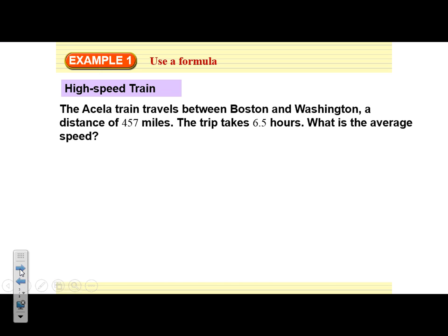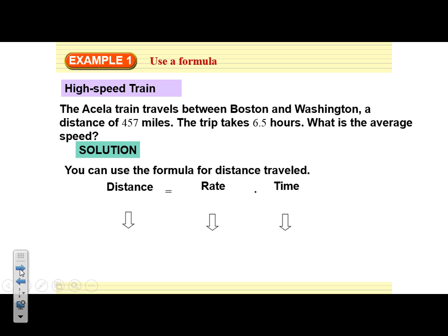Let's start here with our first example. We're going to use a formula. Many times story problems can be solved using a formula that we may have already learned about. Here we have a high speed train traveling between Boston and Washington, a distance of 457 miles. The trip takes 6.5 hours. What is its average speed? So if you think back to what you may already know, you've learned about a formula that you can use to calculate distance traveled: Distance equals rate times time.